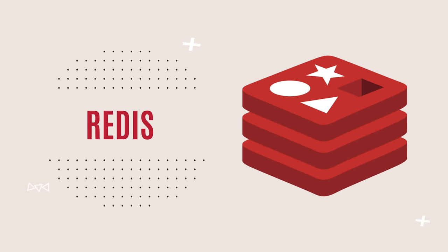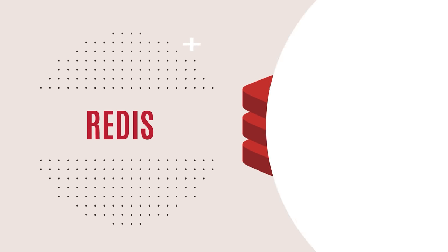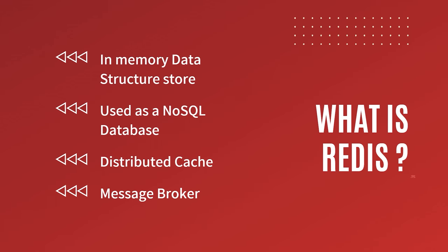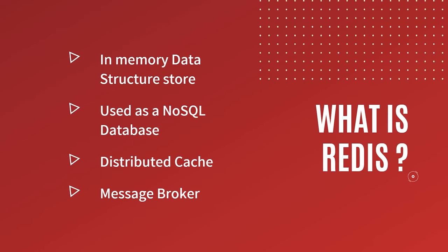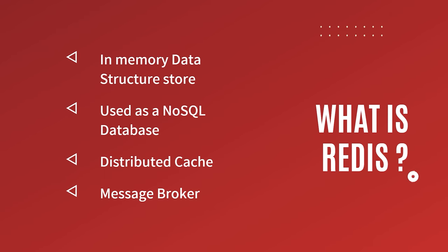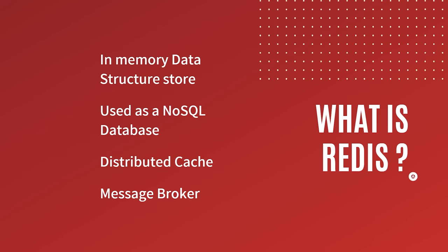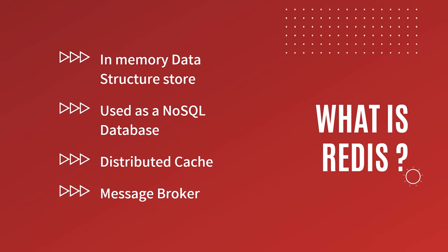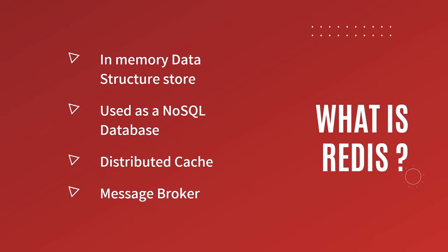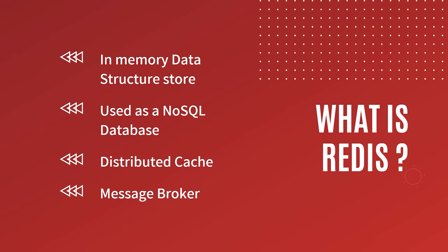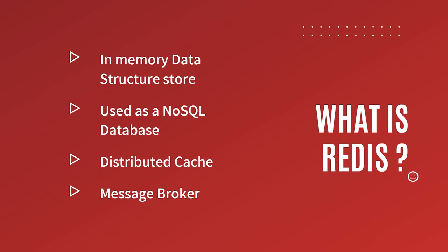Redis is an in-memory data structure store used as a database, cache, and message broker. Following in the footsteps of other NoSQL databases such as Cassandra, CouchDB, and MongoDB, Redis allows the user to store vast amounts of data without the limits of a relational database.